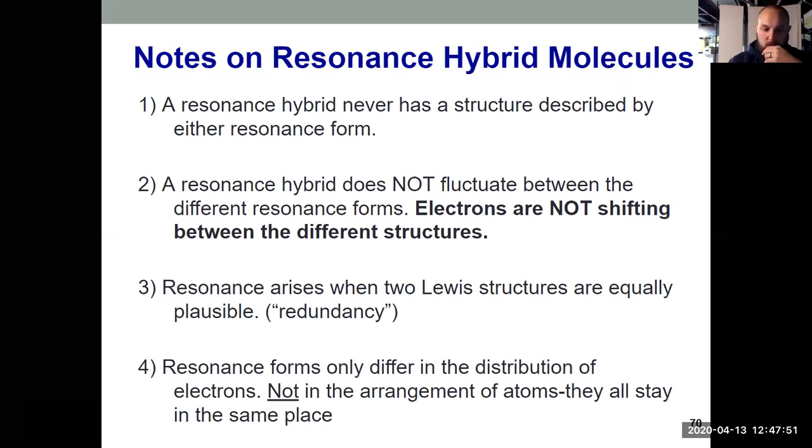So key ideas before we leave resonance. Hopefully you picked up a lot of this from those examples. The resonance hybrid, the thing that actually exists in nature, has a structure that isn't described by either resonance form. Because it's not possible for us to draw a bond and a half or a bond and a third, which is why we draw multiple resonance structures.